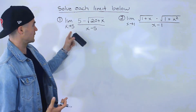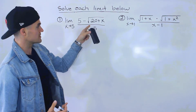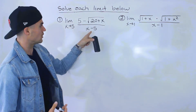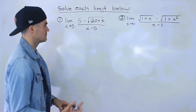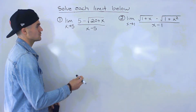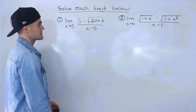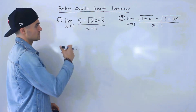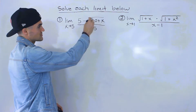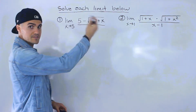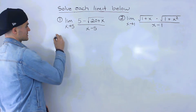The first one: the limit as x approaches 5 of (5 minus the square root of 20 plus x), all over (x minus 5). Notice we can't make a direct substitution because if we do, the denominator is going to be 0, and the numerator is also going to be 0 — we'd have the square root of 25 which is 5, so 5 minus 5 is 0. So we've got to rationalize this.